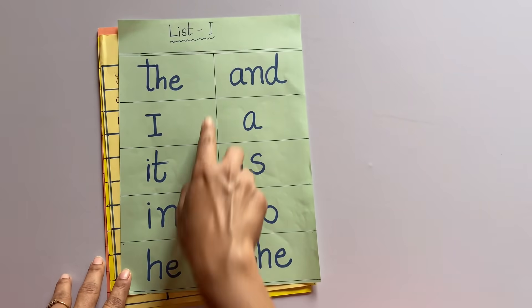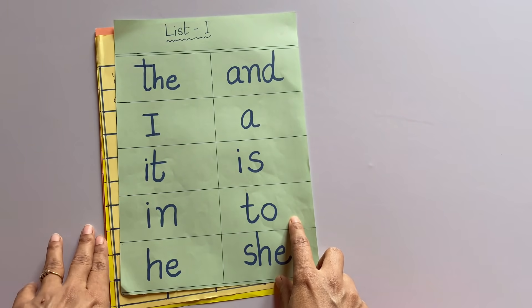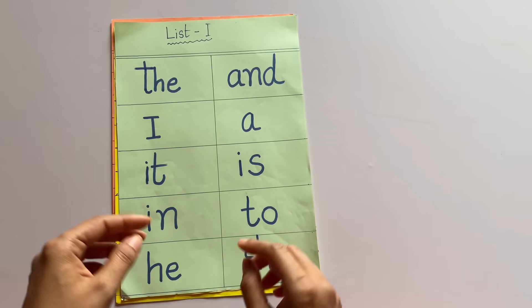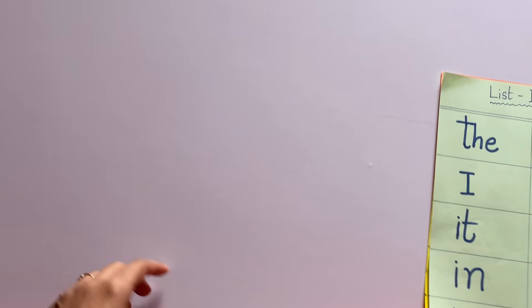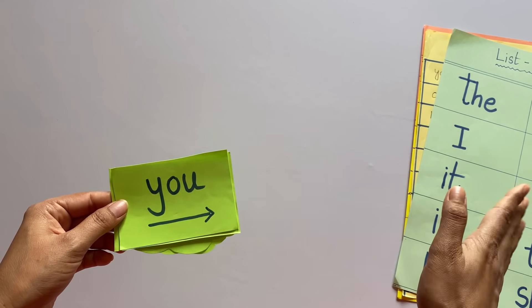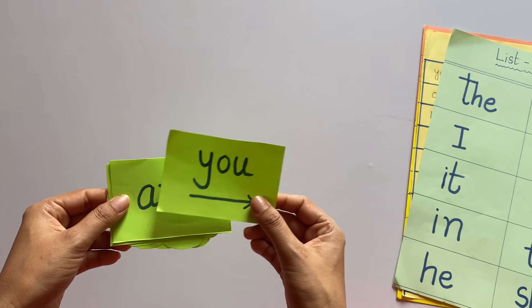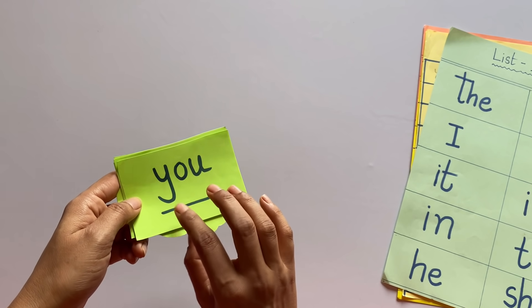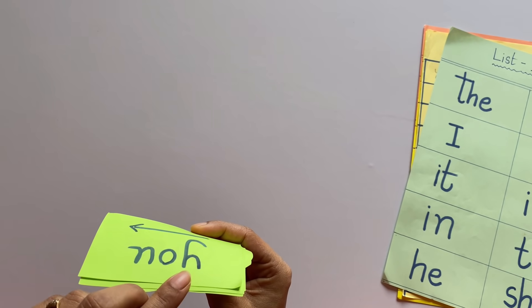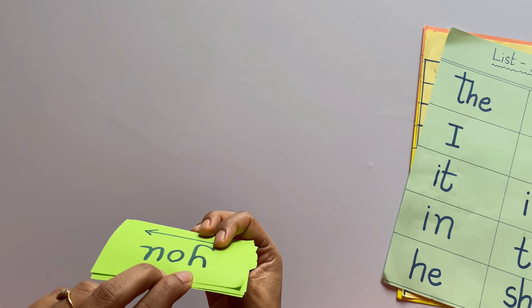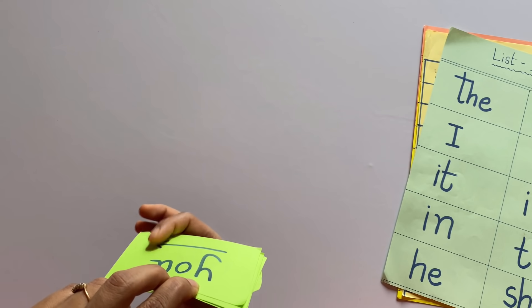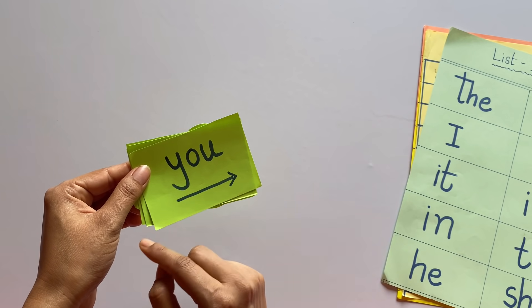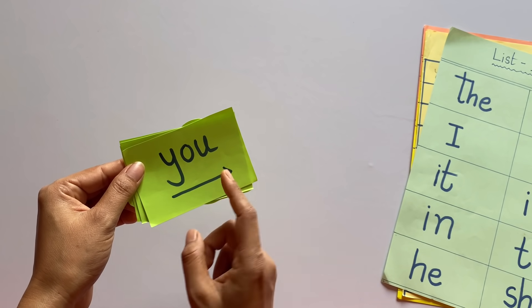You can use a 3-step process. First, look at the sight word and see it. Then, say it out loud. Then, spell it out. And finally, repeat — practice using it again and again to memorize it.